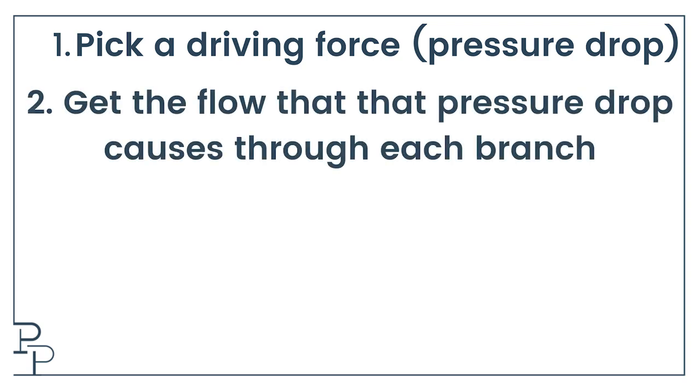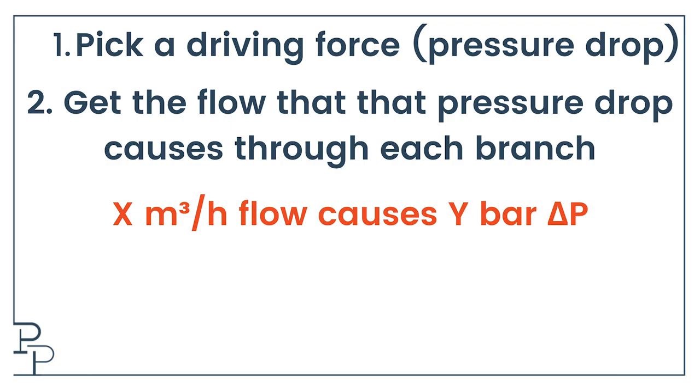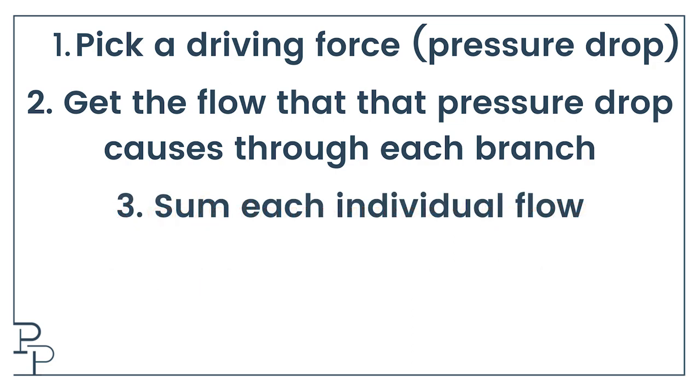Step 2, get the flow that that pressure drop produces through each individual branch. We are used to thinking that X cubic meters per hour of flow causes Y bar worth of pressure drop, but try to flip those around in your head. If you apply Y bar worth of differential pressure across a branch, then that will result in X cubic meters per hour of flow through that branch. Step 3, add up the individual branch flows to get the total flow that would result through all branches if you were able to maintain that differential pressure across the entire system.